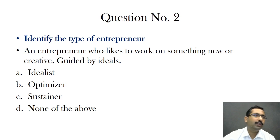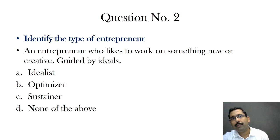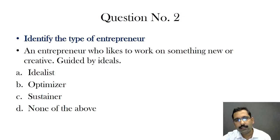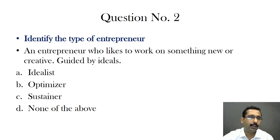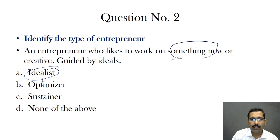Question two: identify the type of entrepreneur. If you have studied chapter number one, there are 13 to 14 different types of entrepreneurs and their characteristic features are discussed. It is very important to know their traits and map them to the right word. The question describes an entrepreneur who likes to work on something new or creative, guided by ideals. The answer is the Idealist — always looking for something new to take forward.